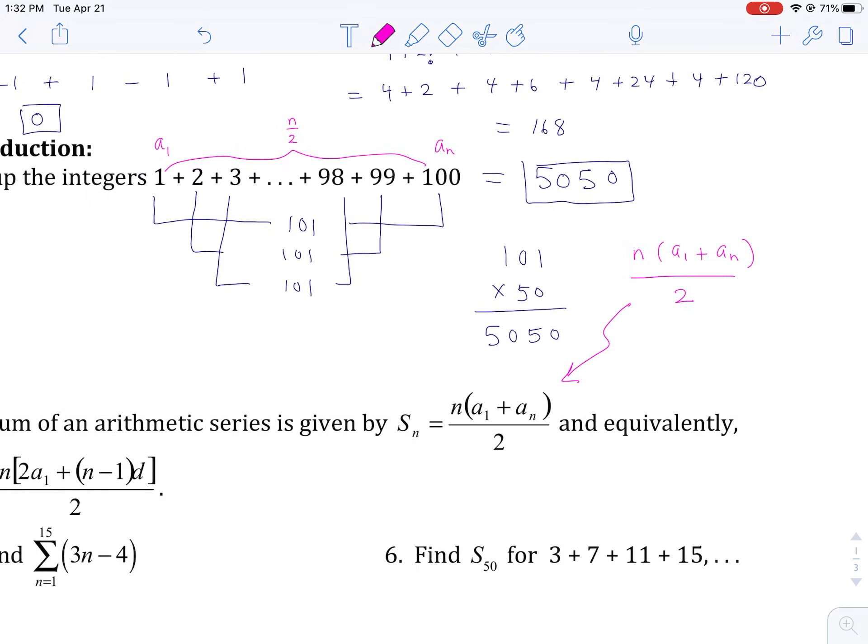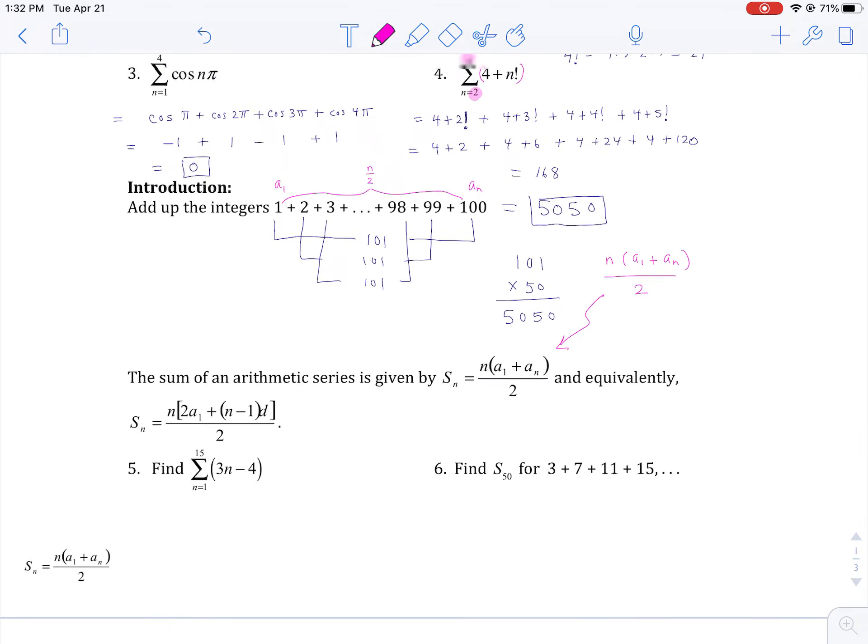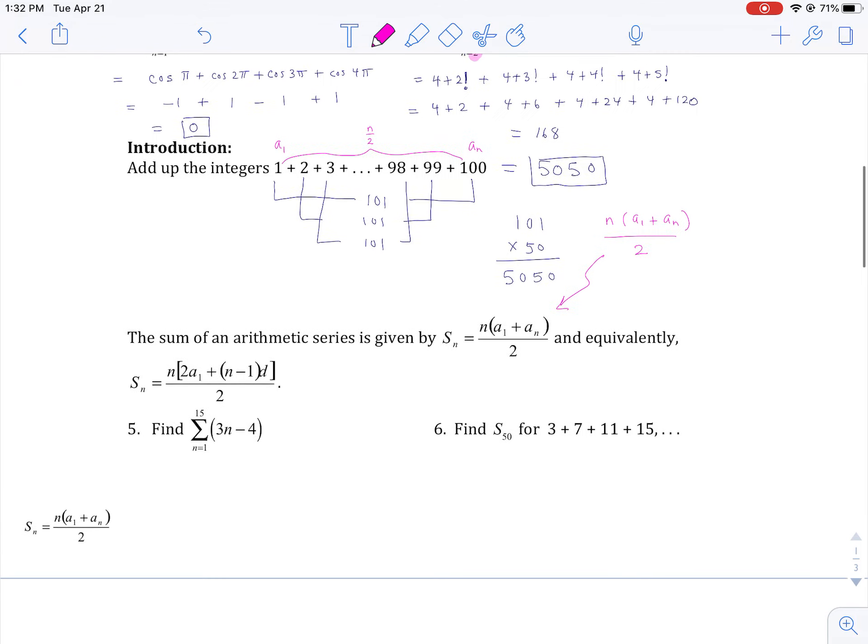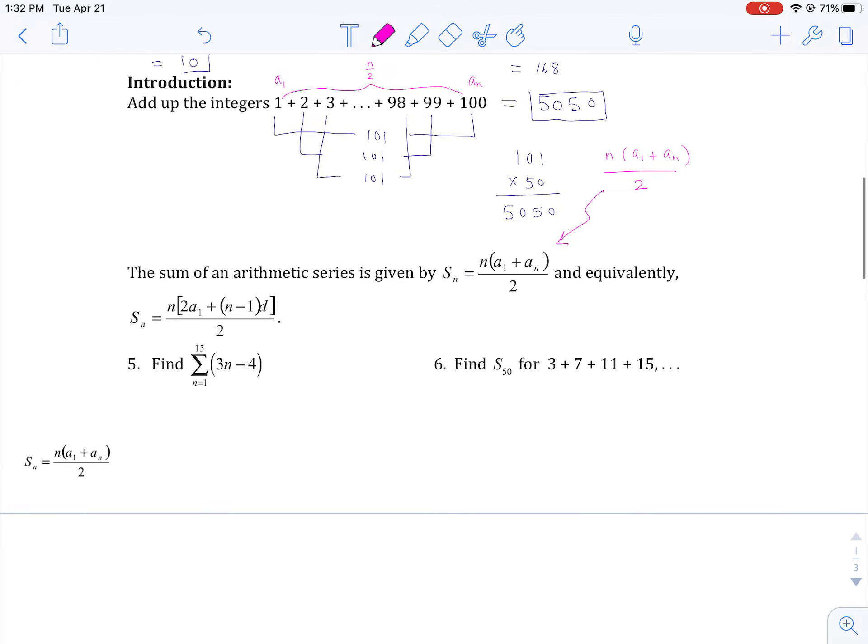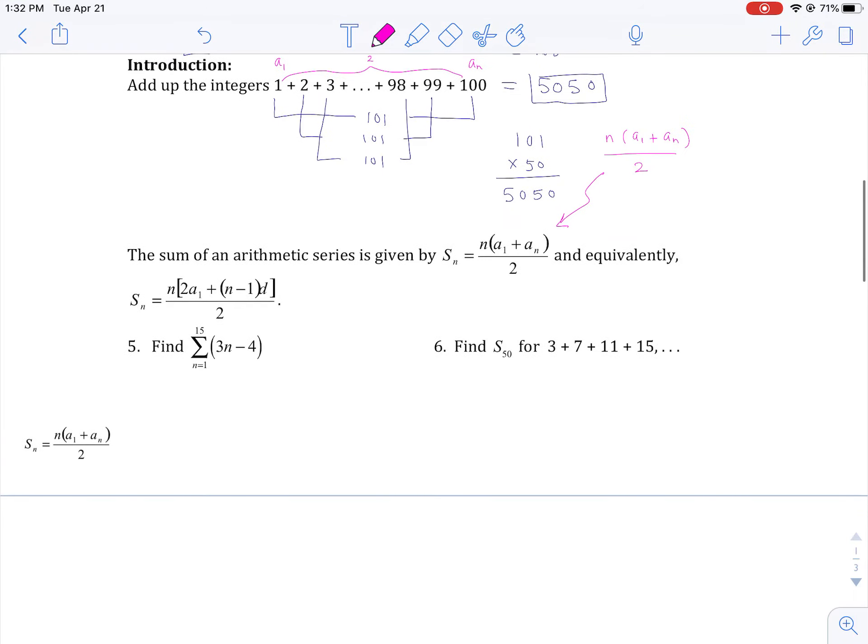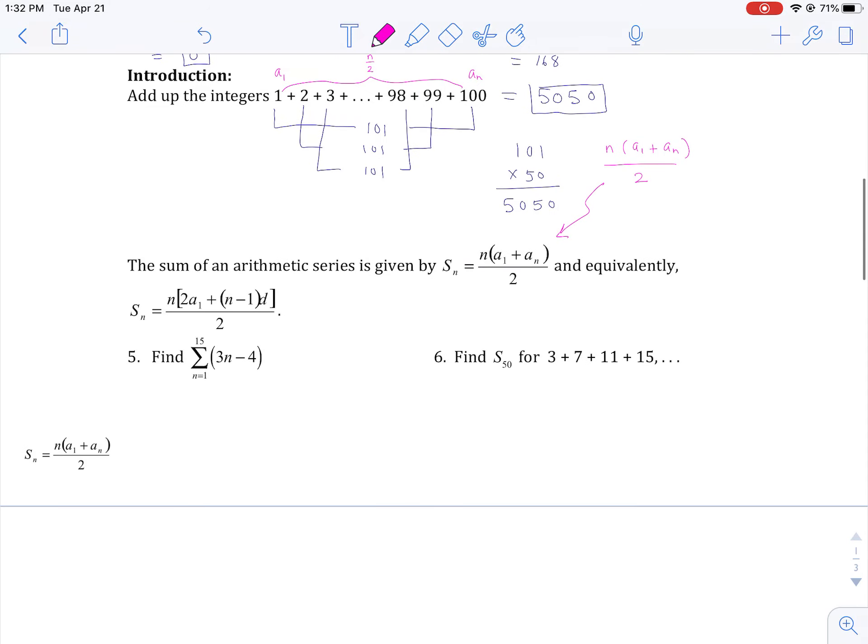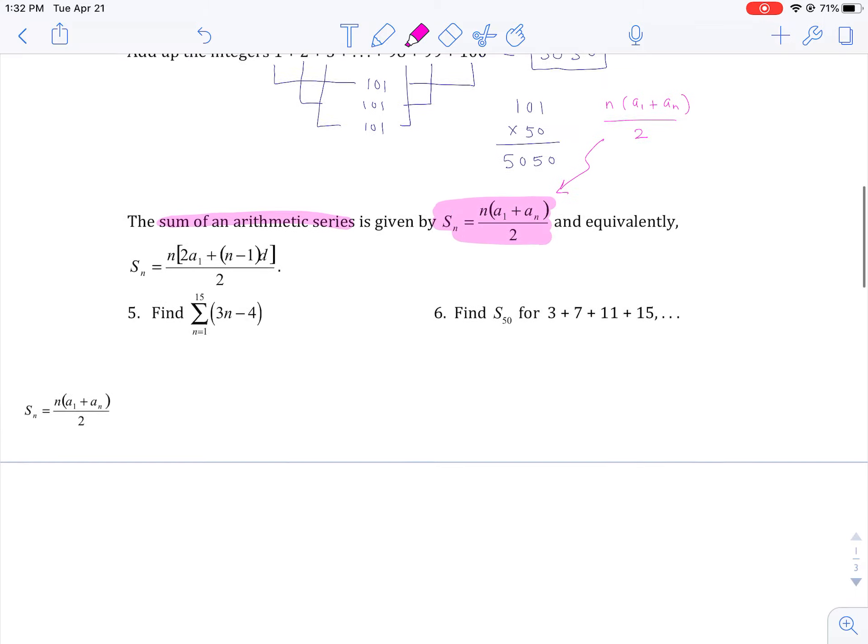And that's where we get this formula for the sum of an arithmetic series. Add up the first and the last and then multiply that by the number of terms and divide by 2. So without realizing it, we kind of proved that theorem for the sum of an arithmetic series right there.